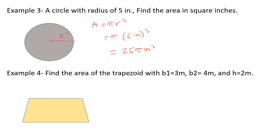Example 4: Find the area of a trapezoid with b1 equals 3 meters, b2 equals 4 meters, and height equals 2 meters. Area equals one-half times (b1 plus b2) times height, equals one-half times (3 plus 4) times 2, equals 7 meters squared.